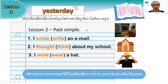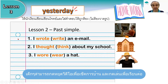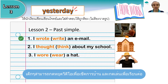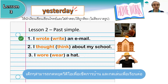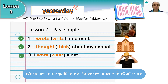First, let's look at the homework from last class. Here are the answers from lesson two. Number one: I wrote an email. Number two: I thought about my school. Number three: I wore a hat. Well done if you got those correct.